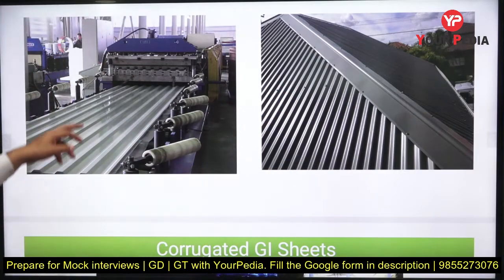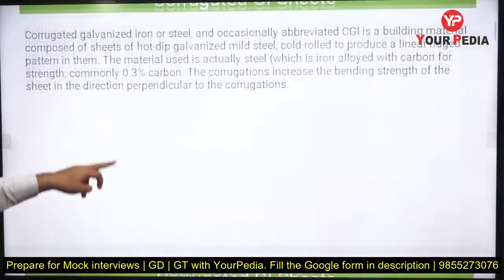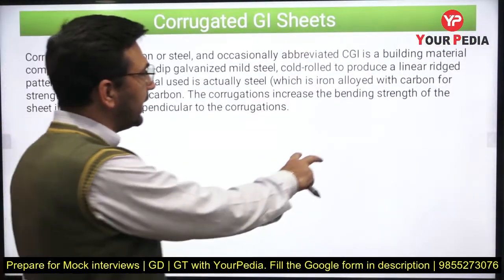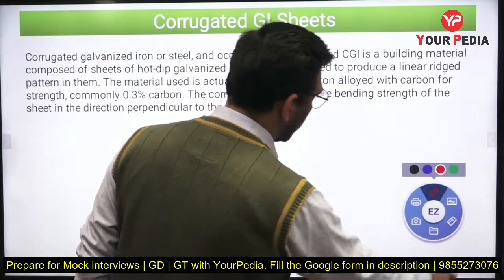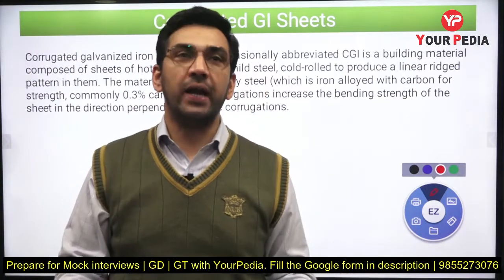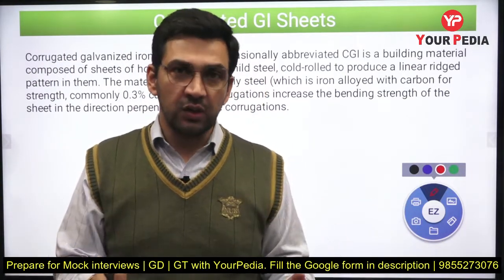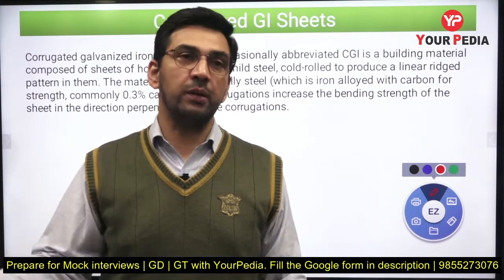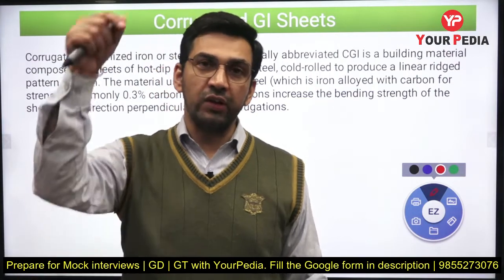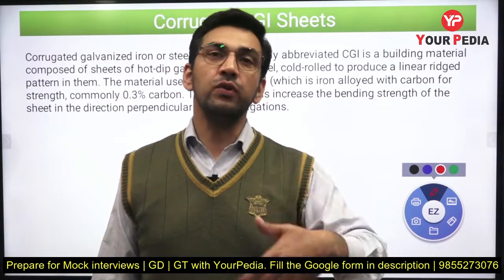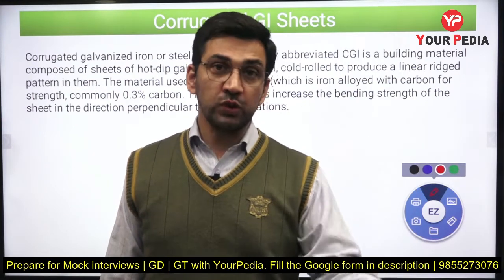Now the second part of the question: why are they corrugated? If you have a plain sheet and apply a load, it will easily bend. So if you want to increase the bending resistance of that plain sheet, you make corrugations — you distort its shape in the form of corrugations. When you apply a load, you get more resistance to bending. That is why we corrugate a plain sheet instead of using it directly.